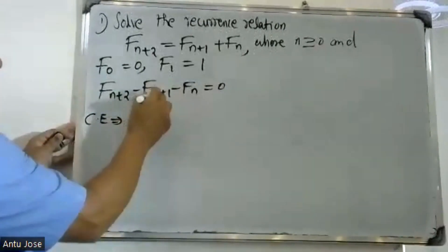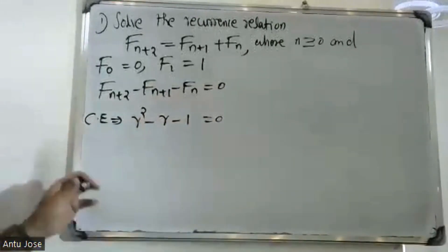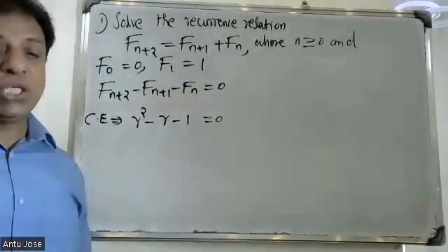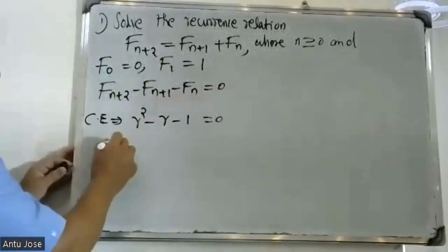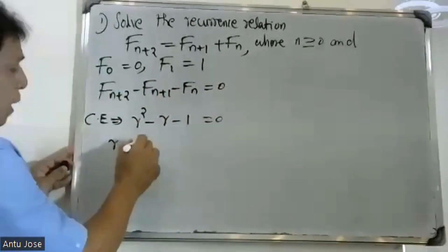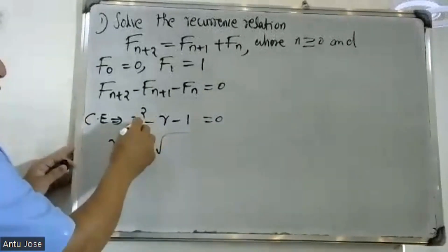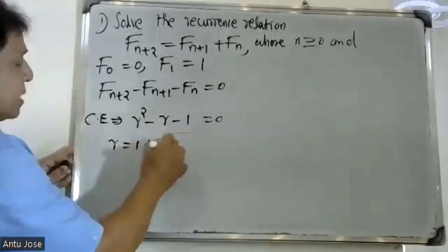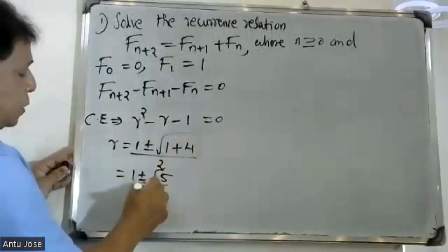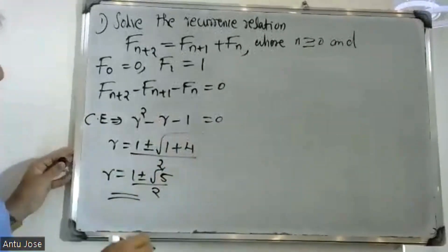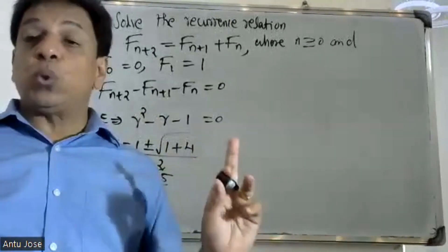The characteristic equation is r squared minus r minus one is equal to zero. Solving gives roots: r equals one plus or minus root five — the real and distinct roots involving one plus root five and one minus root five, divided by two.